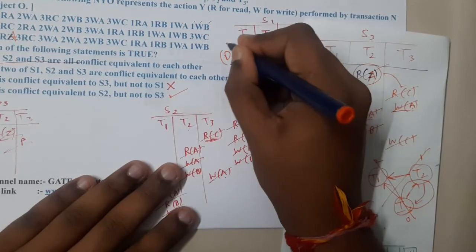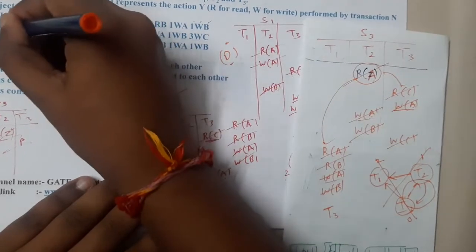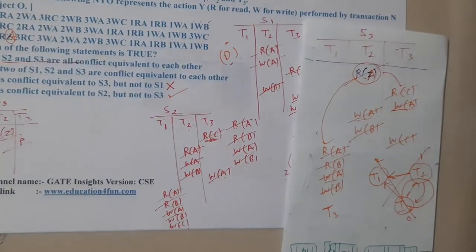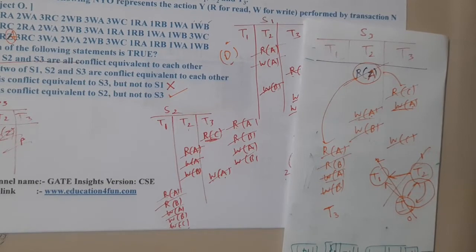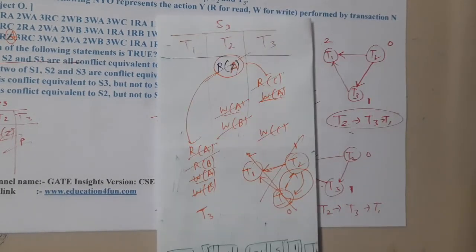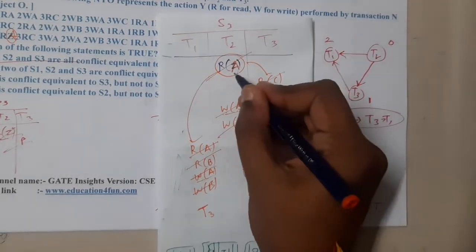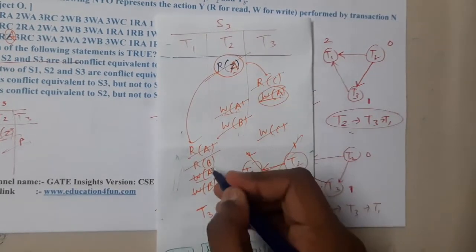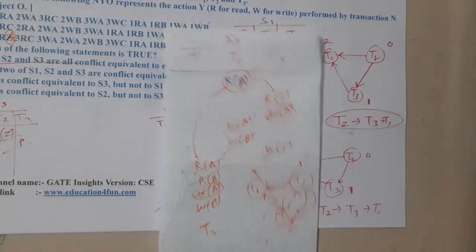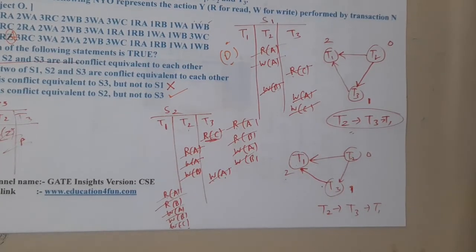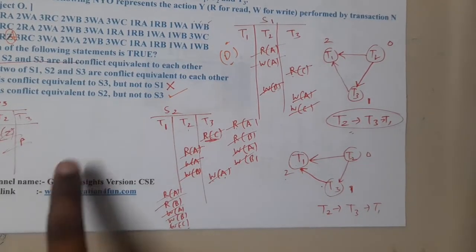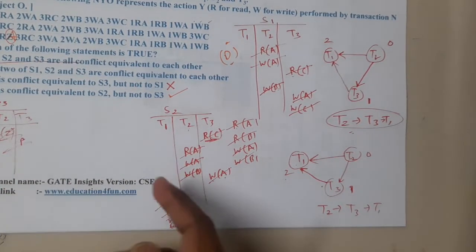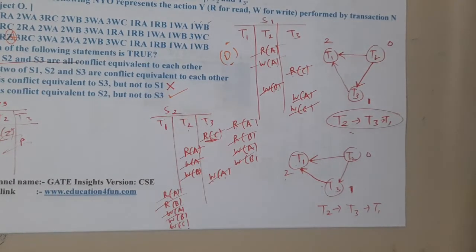D will be the correct answer. That was a bad printing mistake — because of it I was getting everyone as serializable. So to conclude: S1 and S2 are conflict serializable, meaning they are conflict equivalent to a serial schedule. Whereas S3 is not conflict serializable.